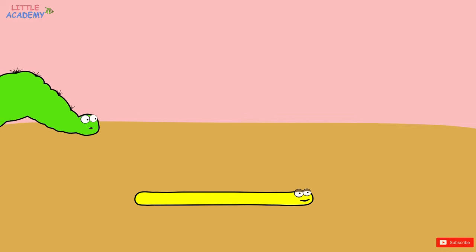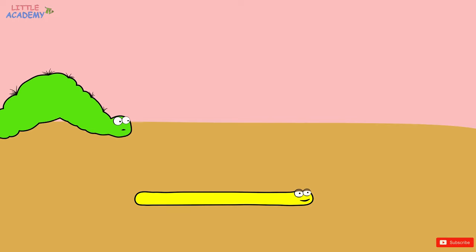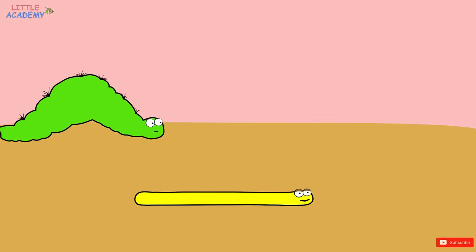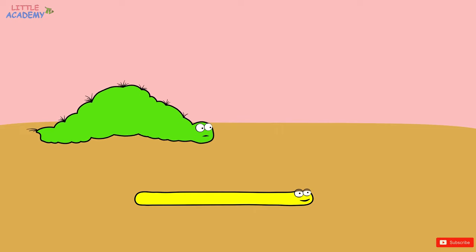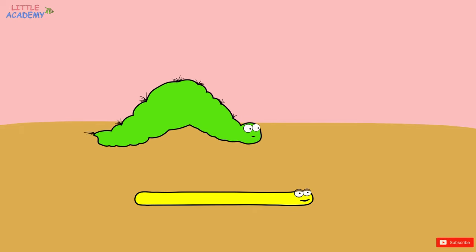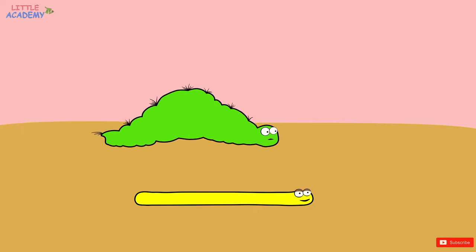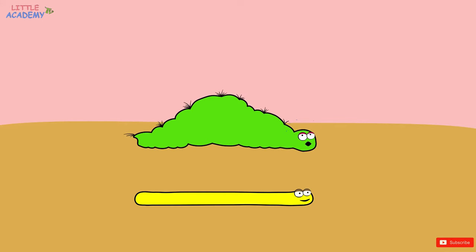The yellow caterpillar is thin. The green caterpillar is thick. Thin. Thick.